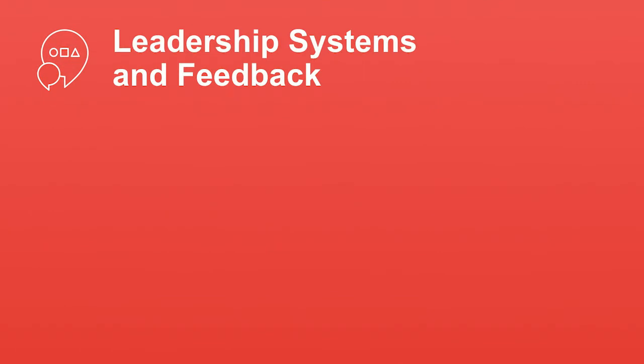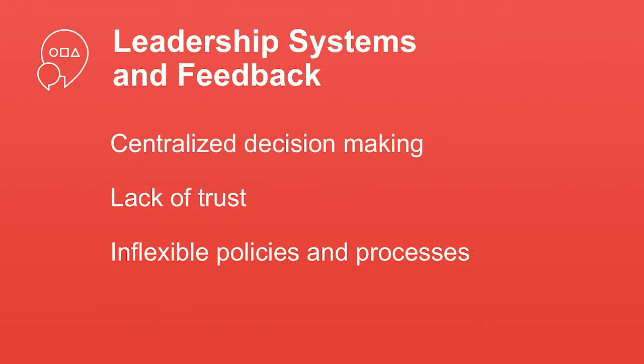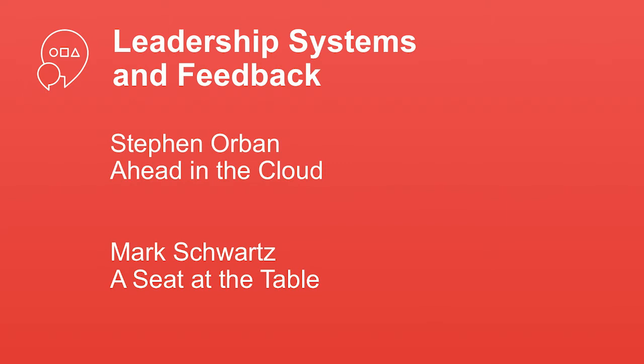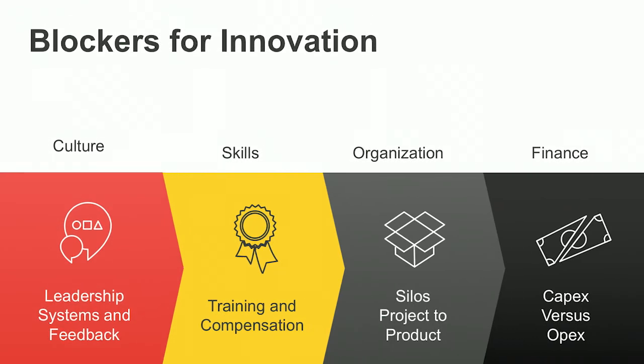If we look at leadership systems and feedback, one of the things that can get in your way is centralized decision making and lack of trust in flexible policies and processes. You have to figure out how to go at speed and make decisions that are local and fast, because if you take everything to a central authority, you can't make enough decisions quickly enough to compete in this new world. Stephen Auburn and Mark Schwartz from AWS have both published books recently — A Head in the Cloud and A Seat at the Table — you should go have a look at those.